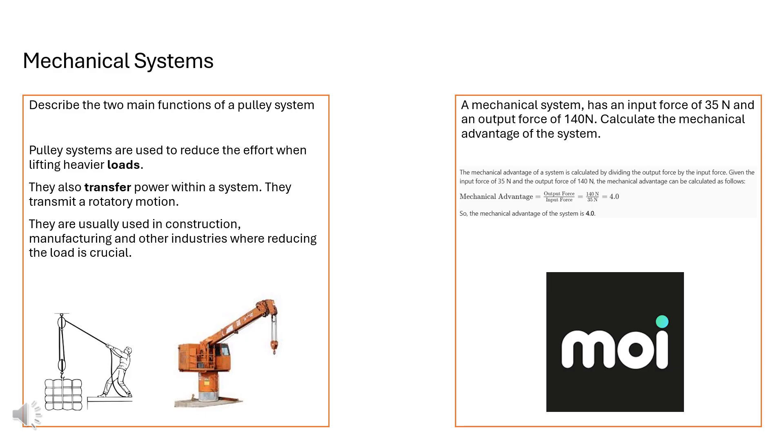To work out the mechanical systems input and output and the mechanical advantage here what we have used is we have used the output force divided by the input force to give us an advantage of 4.0. Sometimes people have used the acronym MOI, so the mechanical advantage, the output and the input as a way of reminding them how to do that. That might be useful to you.